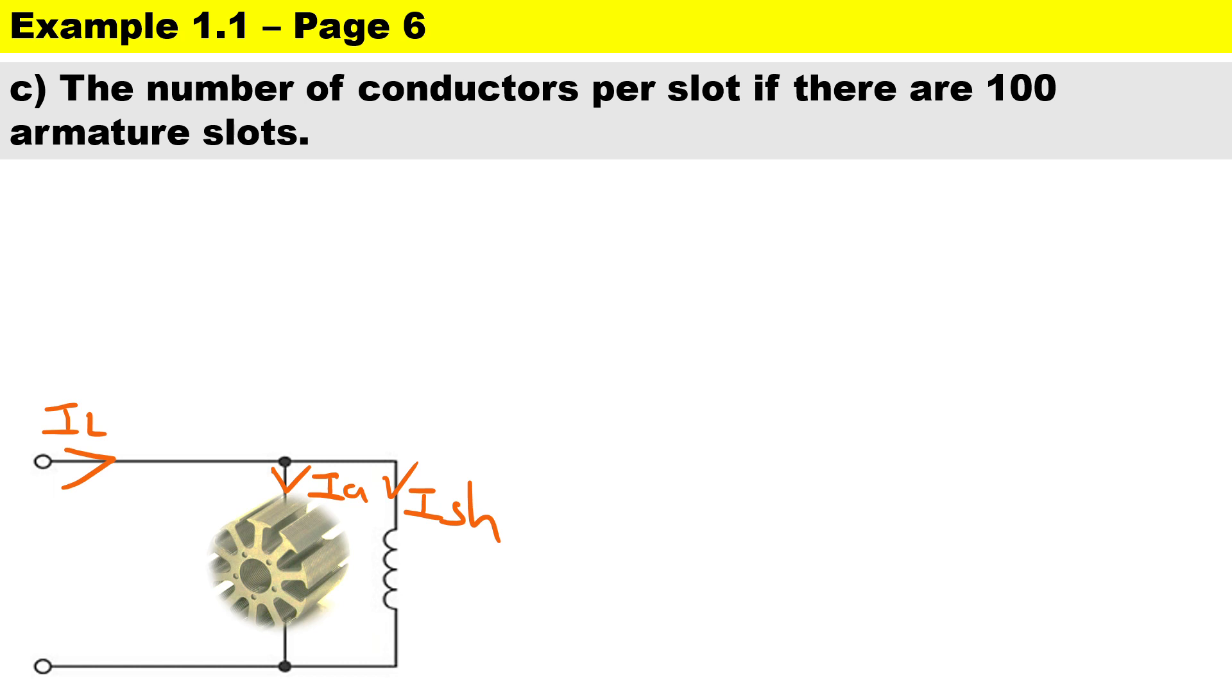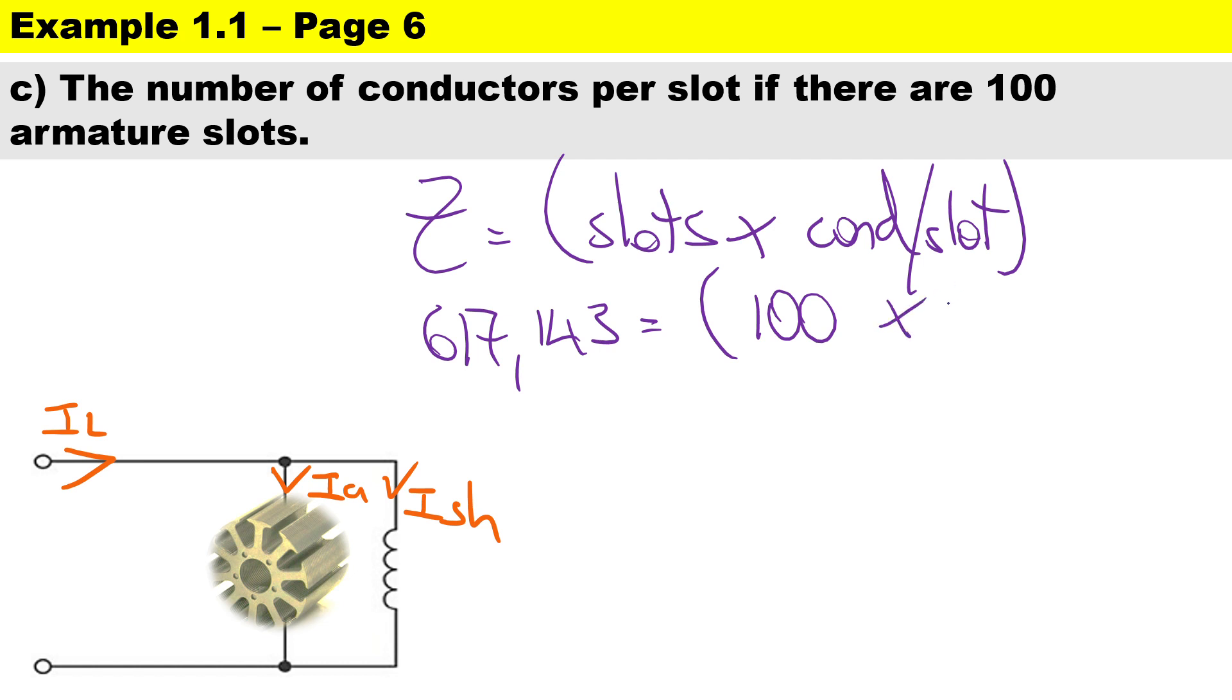Now we need to determine the number of conductors per slot if there are 100 slots. Therefore Z equals the slots multiplied by the number of conductors per slot. So if there are 100 slots, the Z is 617.143.